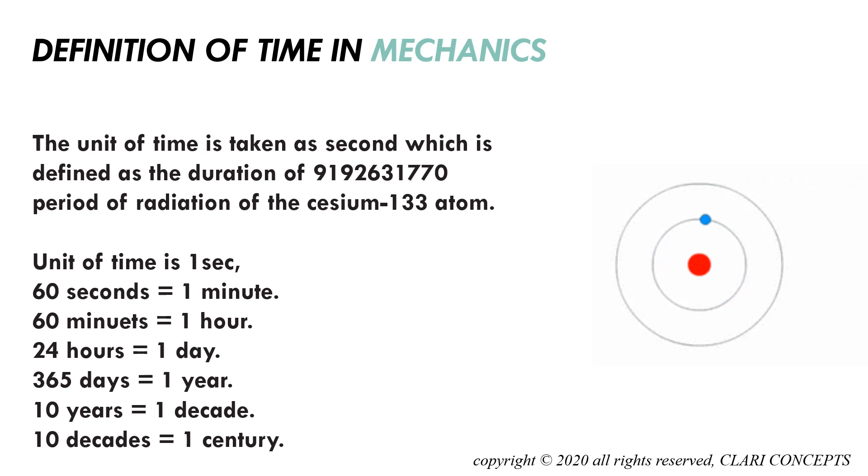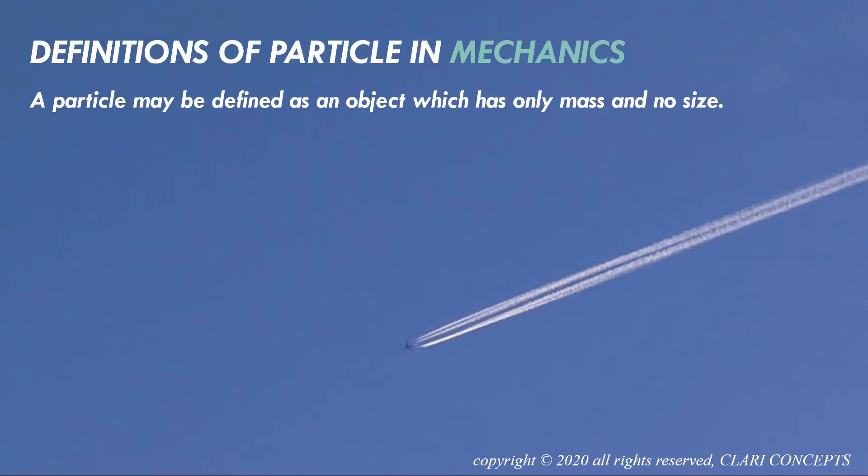Now we'll define a particle in mechanics. A particle may be defined as an object which has only mass and no size. Wait, what do I mean by that? How can something have only mass and no size? Let me explain with an elaboration so that you can understand the concept of particle.